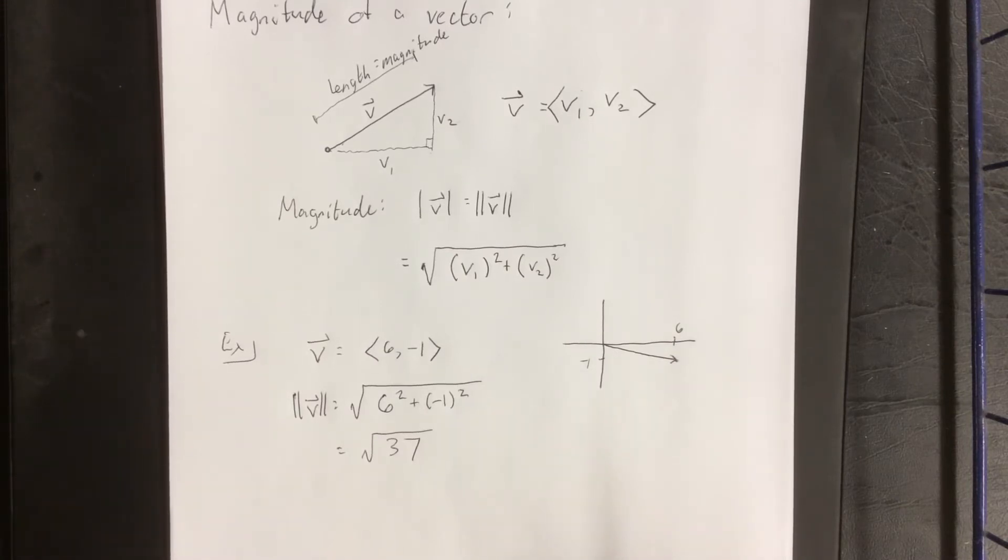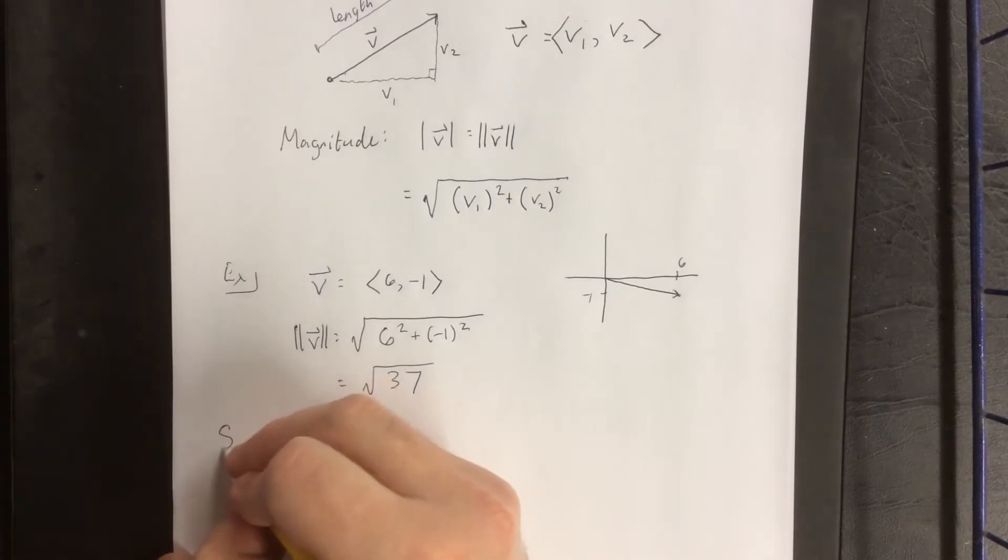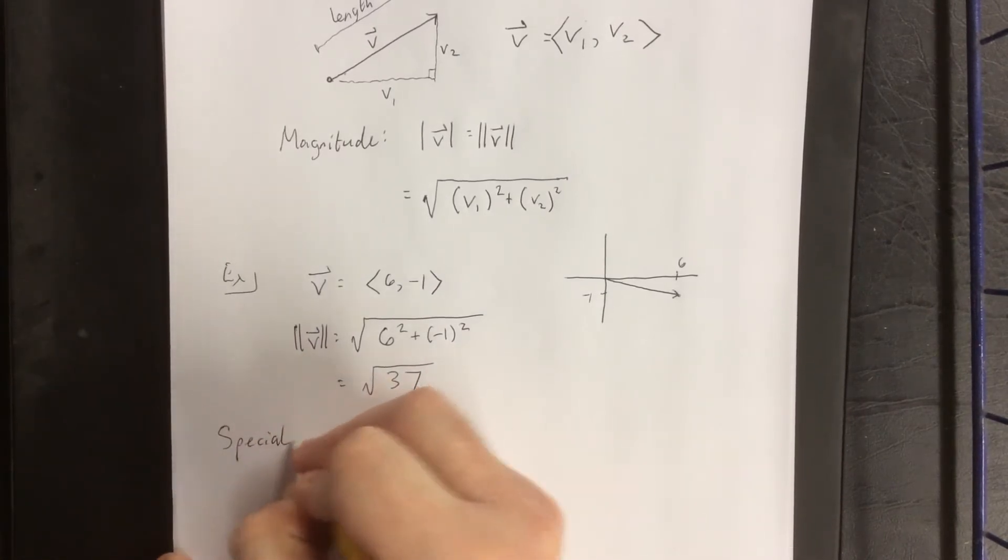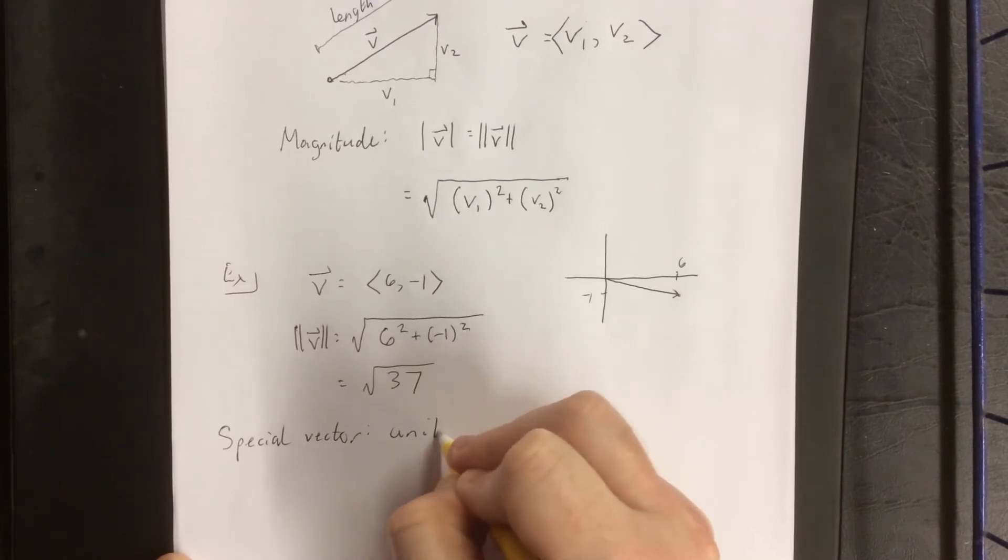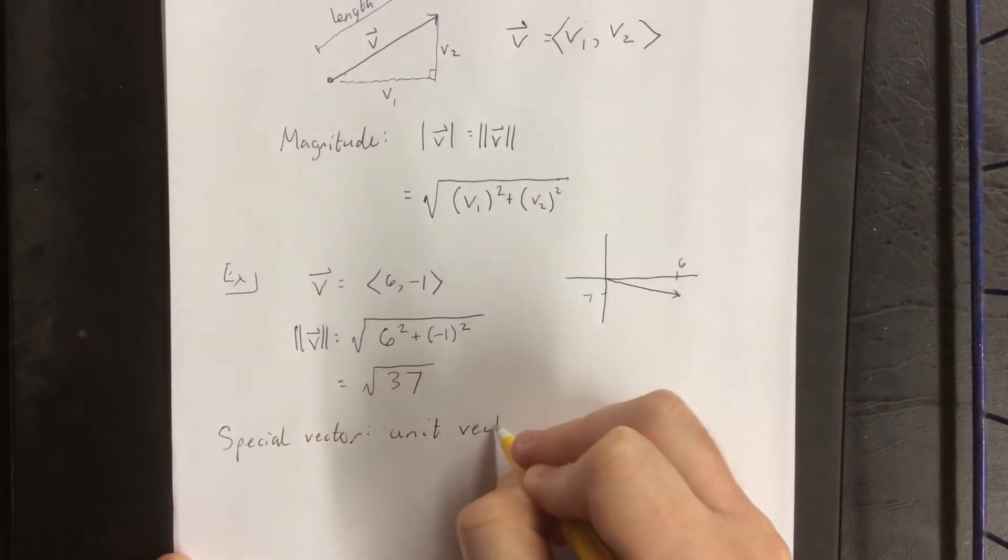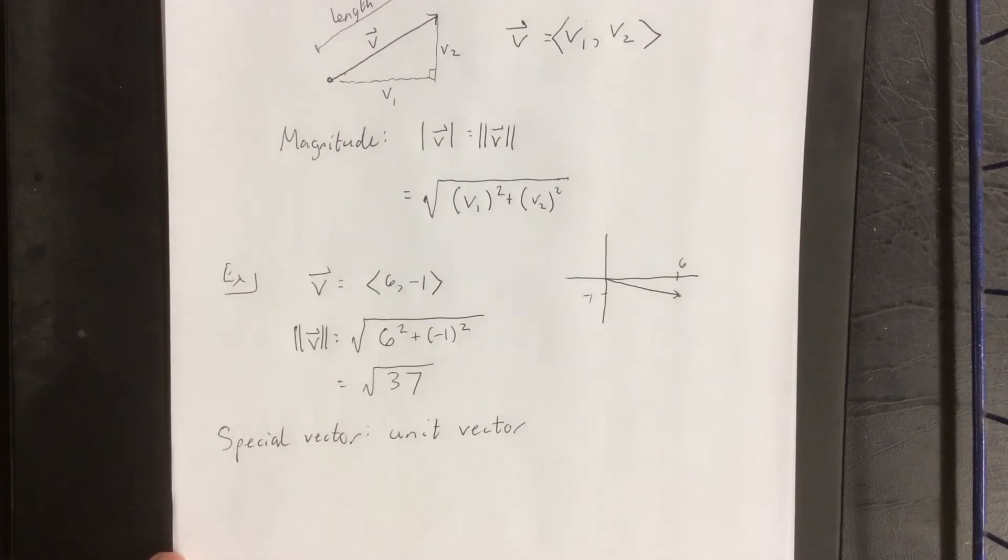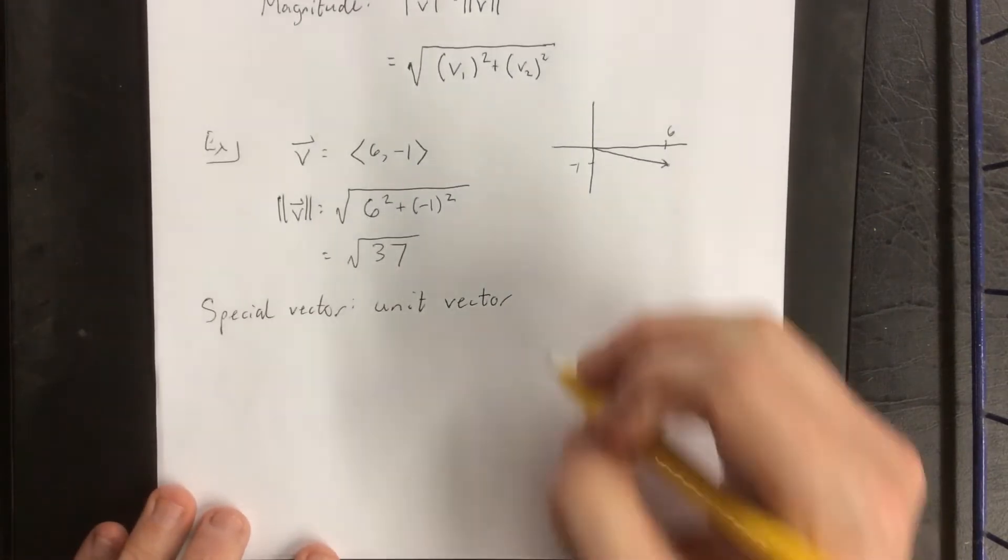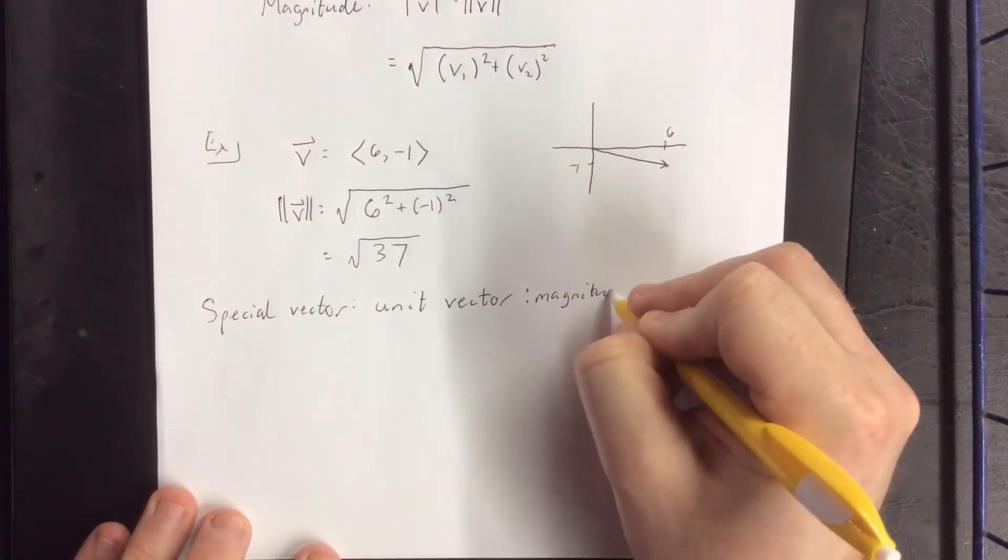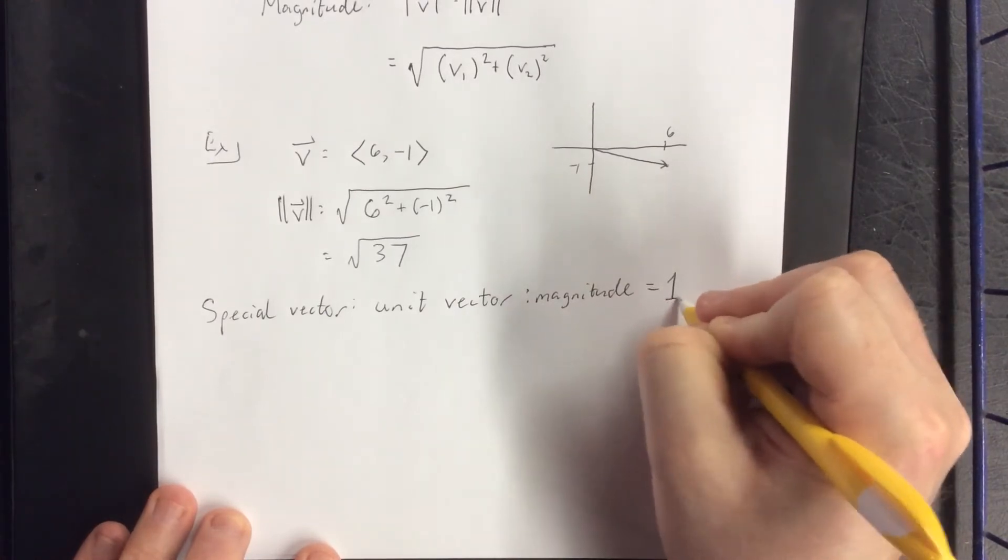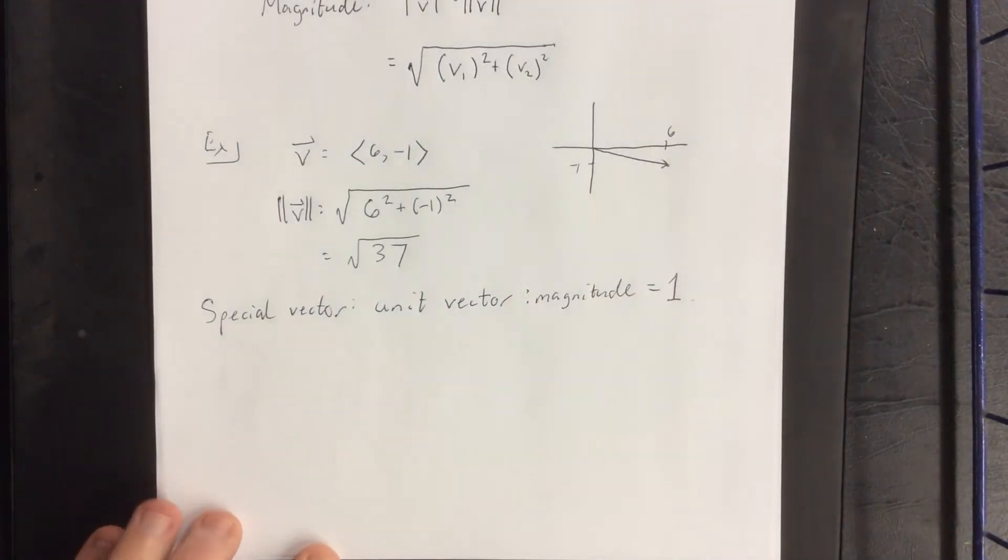There is a special vector called a unit vector. Anytime you hear the word unit in a mathematical sense, it means something equals 1. In this case, if the magnitude of the vector equals 1, then you have a unit vector.